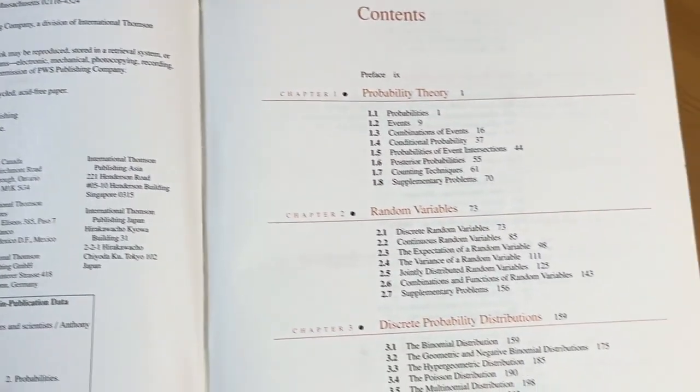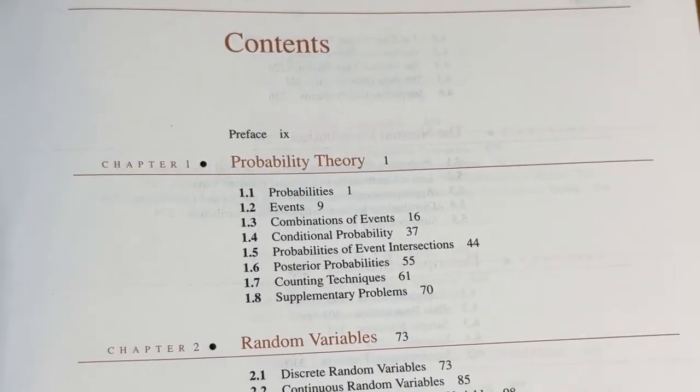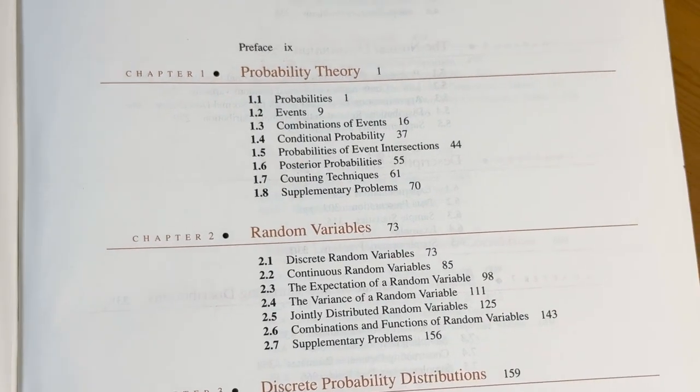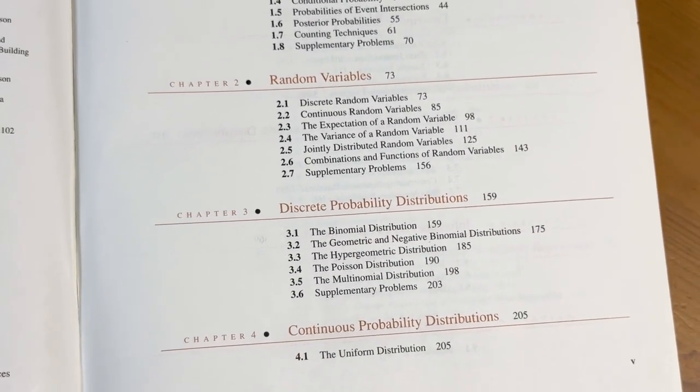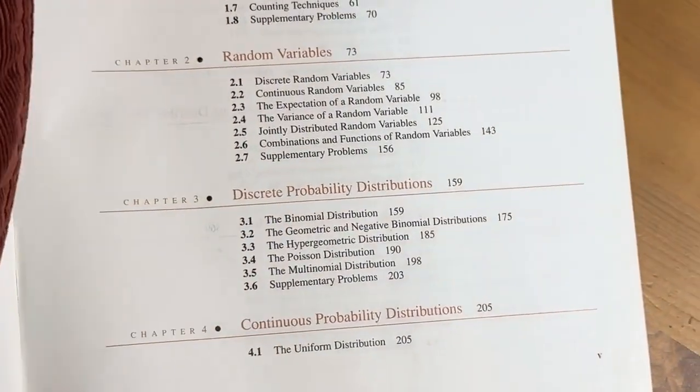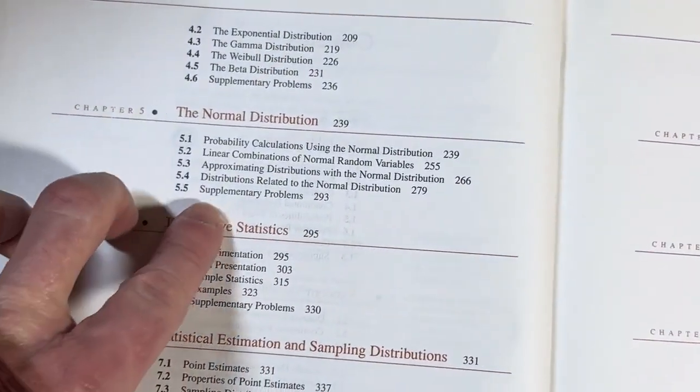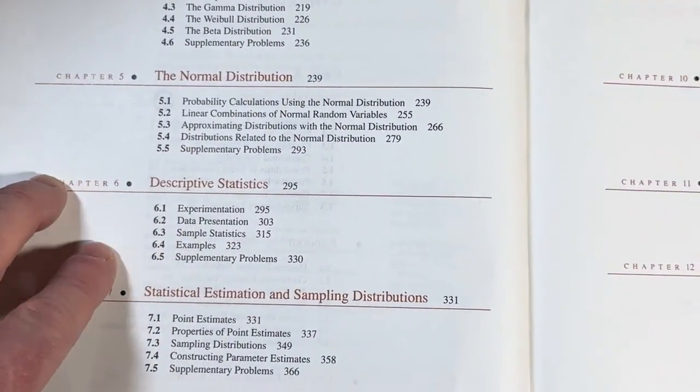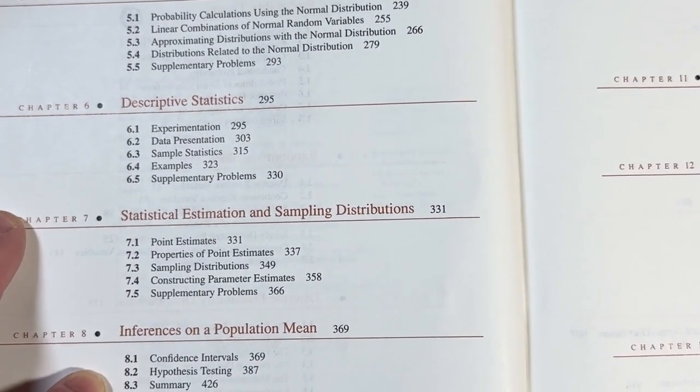Here are the contents. We've got probability theory, random variables, discrete probability distributions, continuous probability distributions. Here's where the calculus is going to come in when you get to the continuous probability distributions. The normal distribution, descriptive statistics, statistical estimation, and sampling distributions.